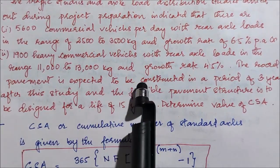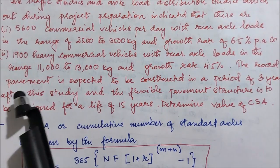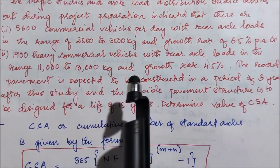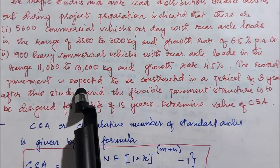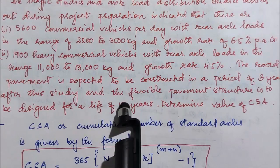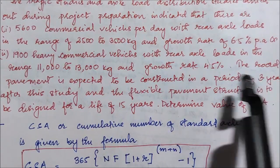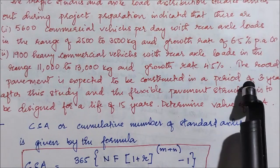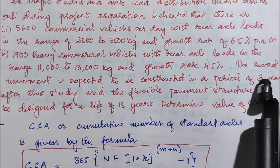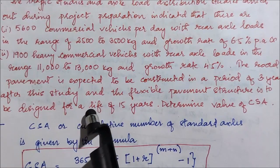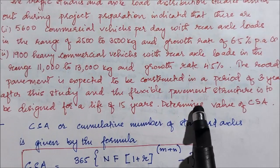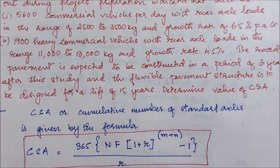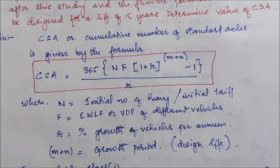The road pavement is expected to be constructed in a period of three years after this study. After this particular traffic study, road construction will start after a period of three years. The flexible pavement structure is to be designed for a design life of 15 years. We have to determine the value of CSA, that is, the cumulative standard axle load.